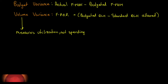Just a quick recap from the end of the last video. The budget variance is our actual fixed manufacturing overhead — what we actually incur — less our budgeted amount. This measures whether we came in over budget or under budget; it measures our spending on fixed manufacturing overhead.